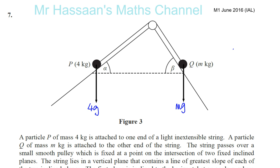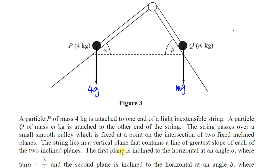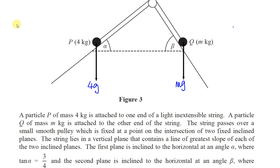The first plane is inclined to the horizontal at an angle of alpha — so this angle here is alpha. And it says tan alpha is equal to 3 quarters. Let's make a little right angle triangle: tan alpha is opposite over adjacent, so that's 3 over 4. The hypotenuse must be 5 by Pythagoras, so sin alpha is 3 over 5.